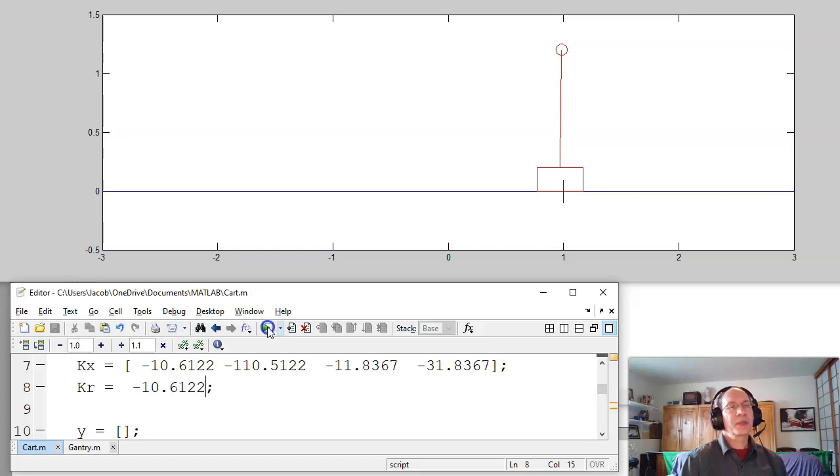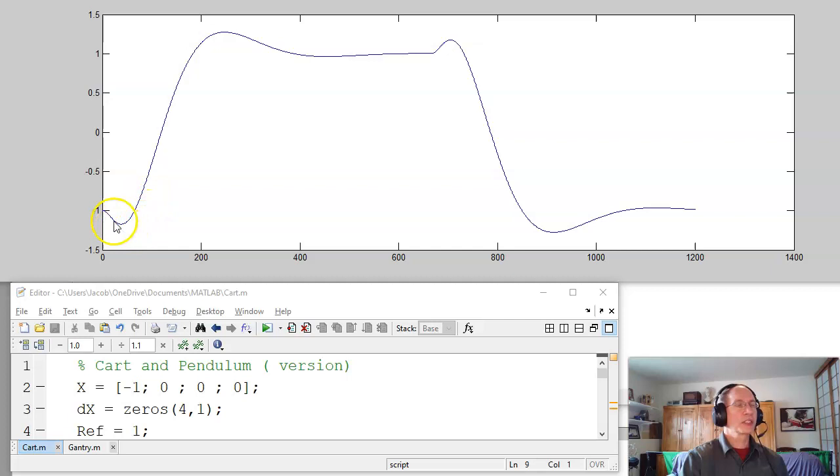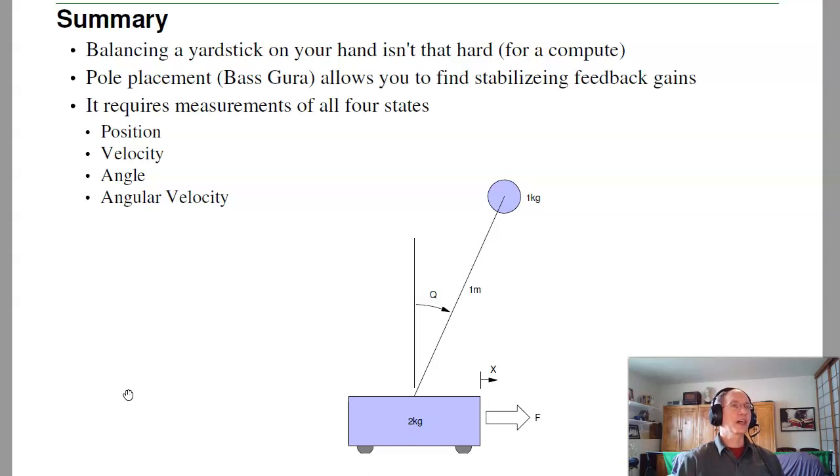Again, pole placement, you can do anything. I can get complex poles too if you want. So that's the cart pendulum system. With pole placement, I can find the four feedback gains. This is kind of hard to guess. I've got too many degrees of freedom. But pole placement doesn't really care. Tell it where you want to put the poles. I've got four constraints. It'll find the four degrees of freedom to match those four constraints. And here's the resulting step response. I've got this undershoot that you're kind of stuck with to get the cart to go right. I first have to go left, get the beam to lean. Here's my overshoot. And it reaches 1. So in summary, balancing the yardstick on your hand isn't all that hard. At least for a computer. Pole placement allows you to find stabilizing feedback gains. And it requires you to measure all four states. I've got to measure position, velocity, angle, and angular velocity.